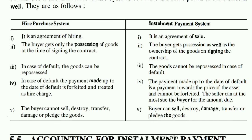In the Installment Payment System, if there is a remaining balance — for example, you have paid 5 out of 12 installments — the company can sue you for the remaining 7. In Hire Purchase, the company takes back the goods and forfeits your payments, whereas in the Installment Payment System, no money is forfeited.